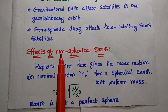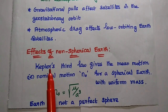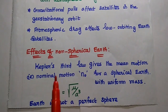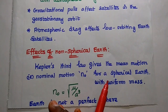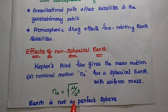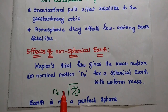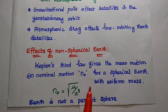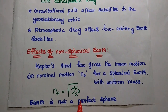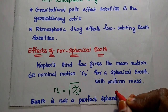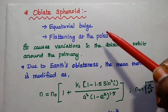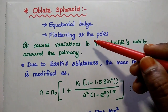The first one is effects of non-spherical Earth. Here we consider Kepler's third law, which gives the relation of the mean motion — the nominal motion N0 — for a spherical Earth with uniform mass. Its value is N0 equal to square root of mu divided by A cubed. But in practice, Earth is not a perfect sphere — it is a non-spherical Earth. The term used is oblate spheroid, which consists of two effects: one is equatorial bulge, and the next one is flattening at the poles.